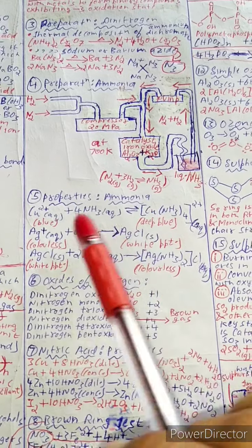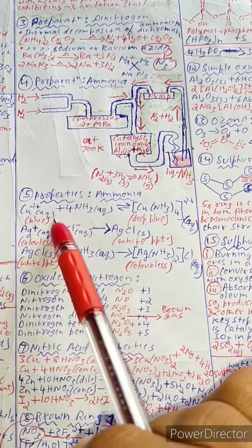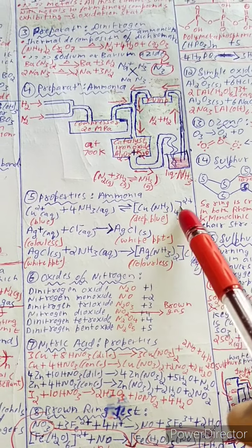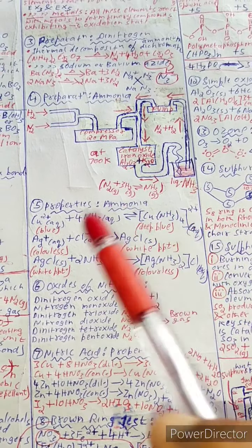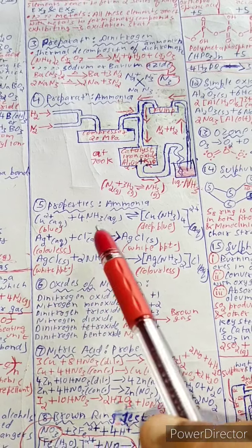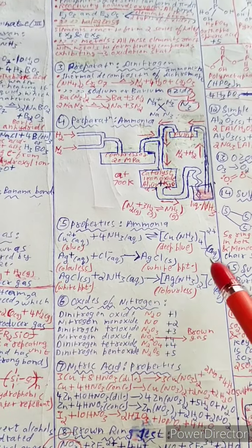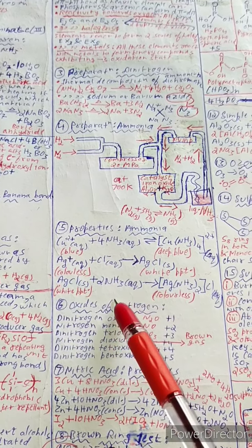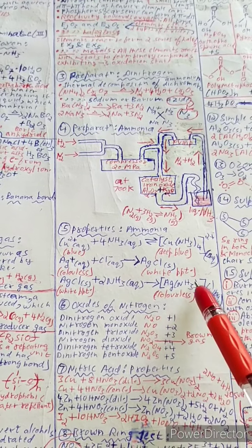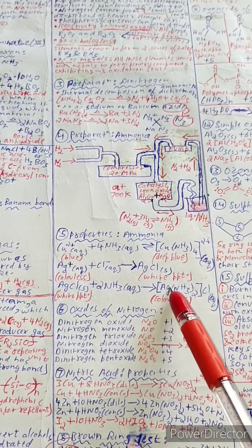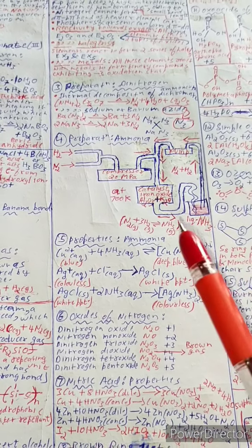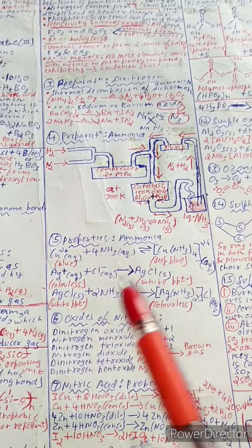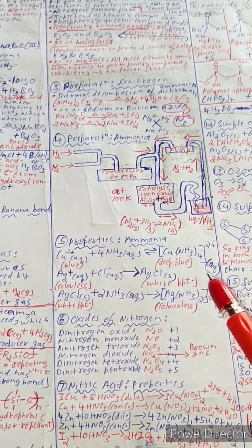Properties of ammonia: Cu²⁺ (blue) plus 4NH₃(aq) gives deep blue copper tetraammine complex, [Cu(NH₃)₄]²⁺. Ag⁺ (colorless) reacts with Cl⁻ to form white AgCl precipitate. AgCl reacts with excess NH₃ to form the colorless silver diammine complex [Ag(NH₃)₂]⁺ chloride.